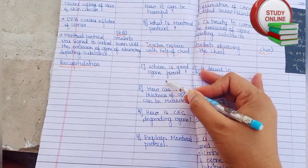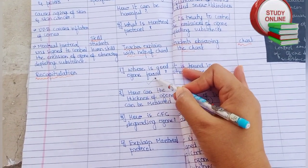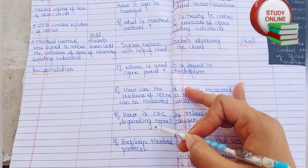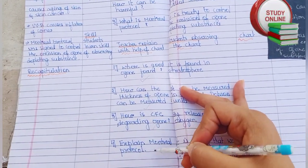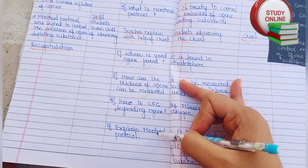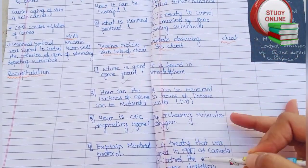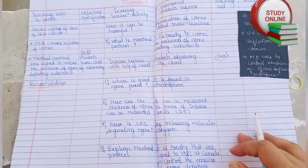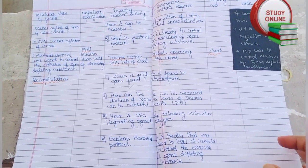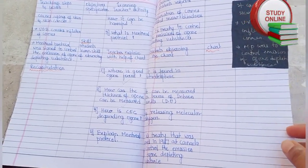For recapitulation I have added four questions: where is good ozone found, how can the thickness of ozone be measured, how is CFC degrading ozone, and explain the Montreal Protocol. Here are the expected answers we expect from students. If you need a PDF, just comment in the comment section below.